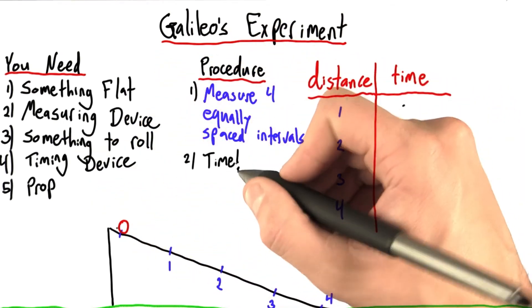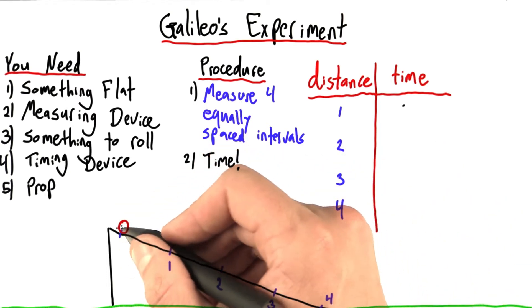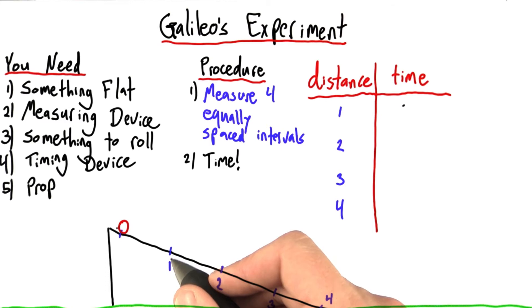Then you're going to start taking time measurements. So for each of these four distances, you'll want to time how long it takes the ball to roll from the starting point to the end point.